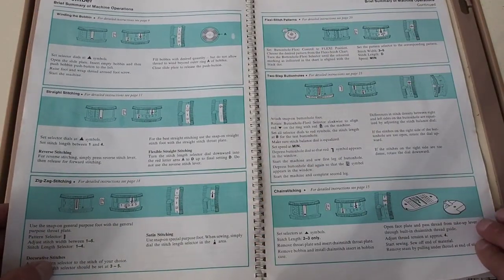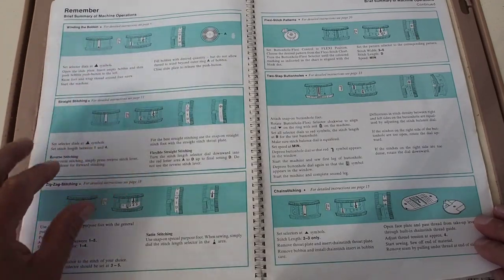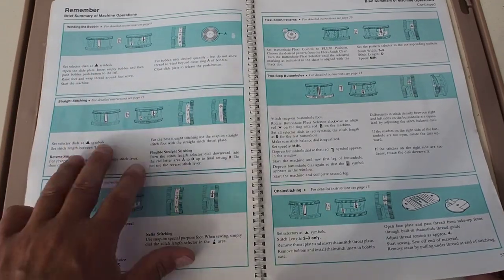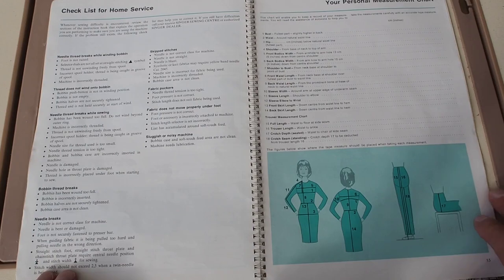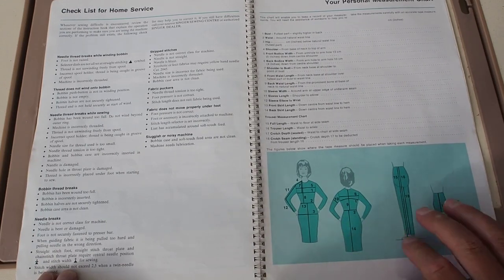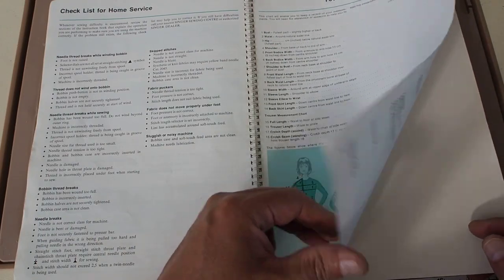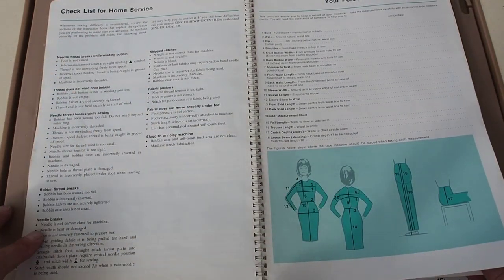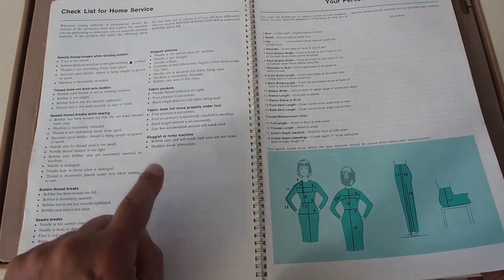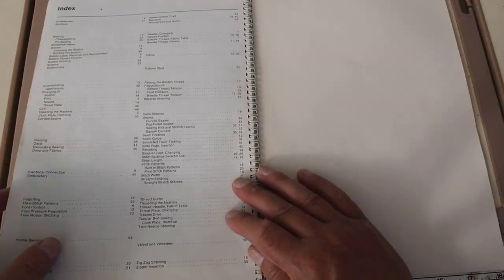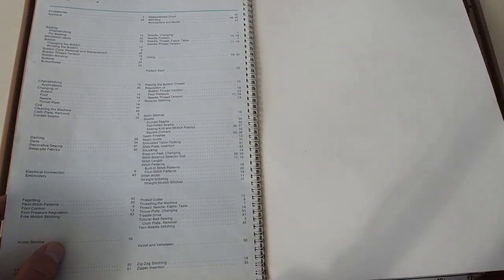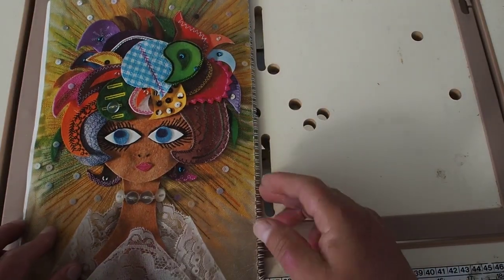Then just a quick reference guide really - problem solving, and then even down to a personal measurement chart here, checklist for home service, troubleshooting guide here. Pretty good, and an index at the back there. Nice little manual.